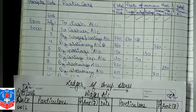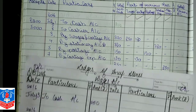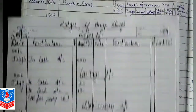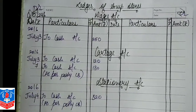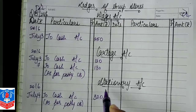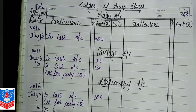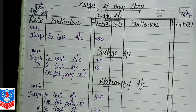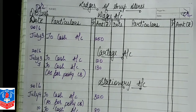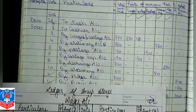Next is stationery 80 on date 10. In the stationery account on date 10: To Cash Account, amount 80. Again, you will write as per petty cash book.